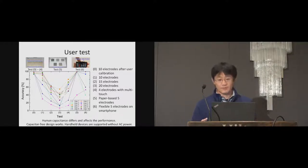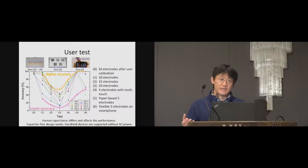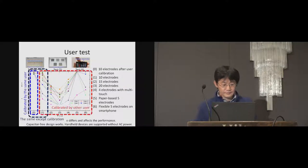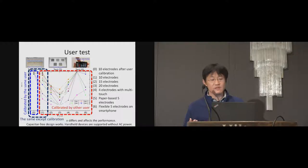User test was conducted with 10 people. 10, 15, 20 electrodes were used in test 1, 2, 3. Test 4 used four electrodes, and 10 touch classes were recognized, including single touch and multi-touch by two fingers. Test 5 used paper-based electrodes, and test 6 used flexible electrodes on smartphone. The user with lower or higher accuracy in test 1 also shows lower or higher accuracy in other tests. From test 1 to test 6, the calibration was conducted by one particular person who did not participate in these tests. The test 0 is the same as test 1 except the calibration. In test 0, the calibration was conducted by the test user himself.